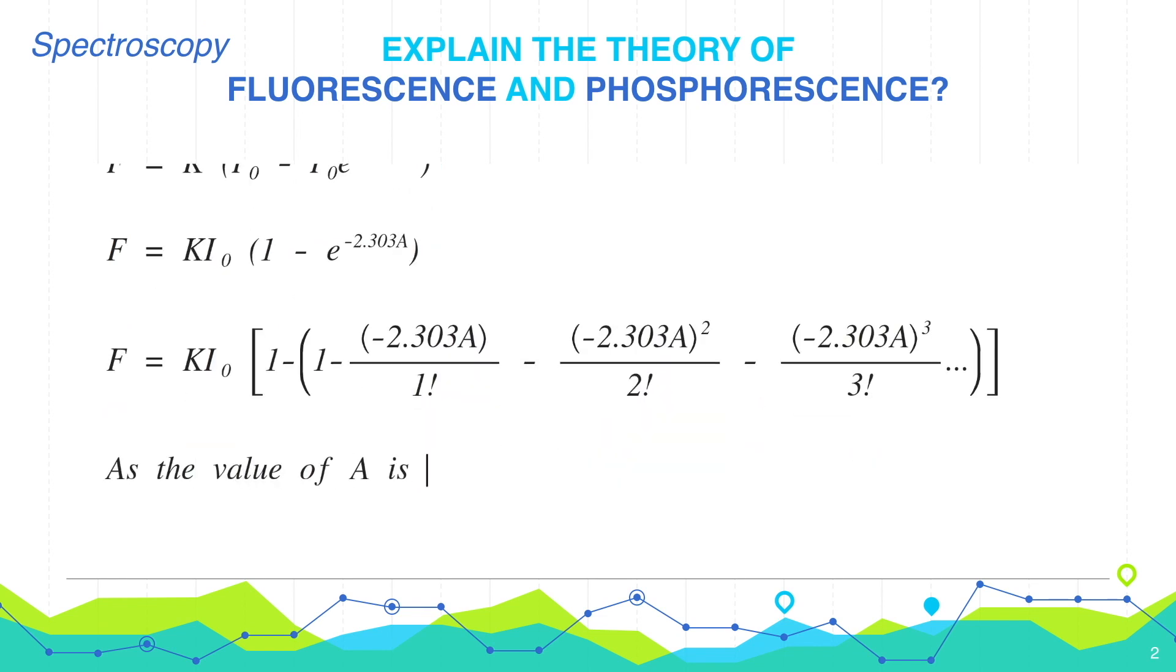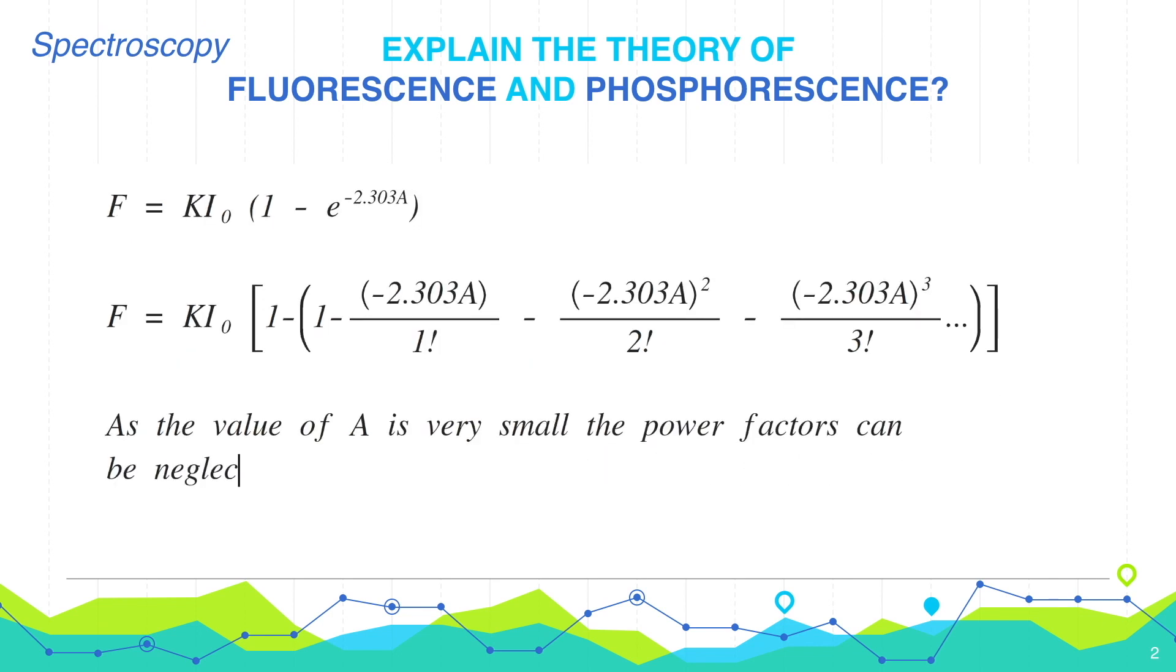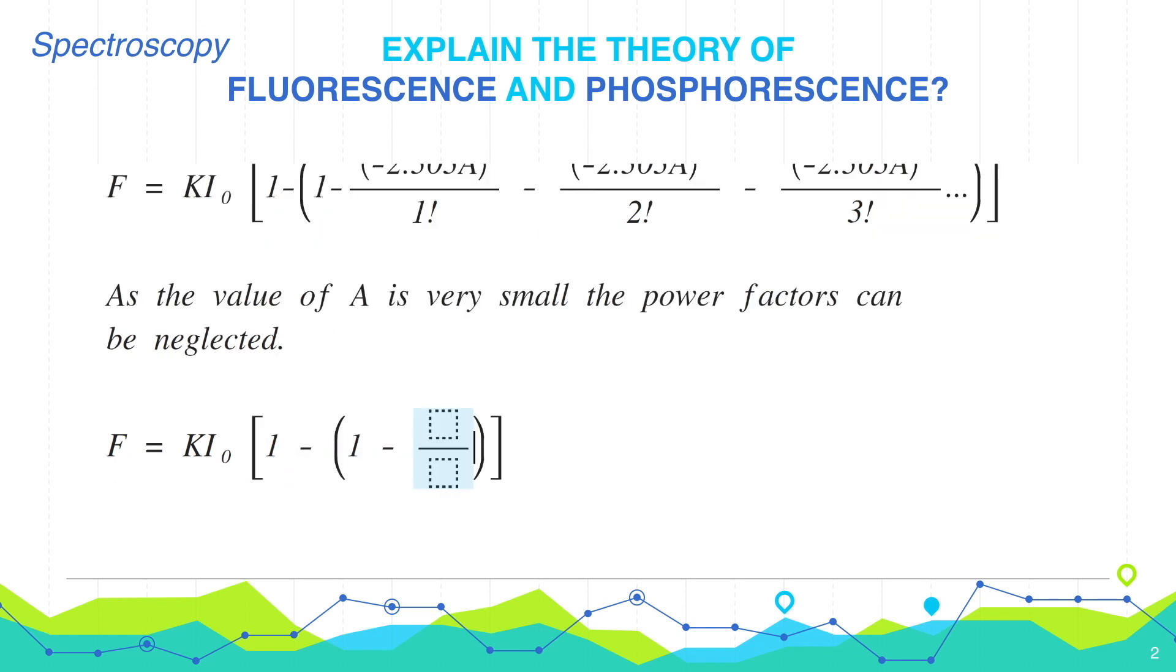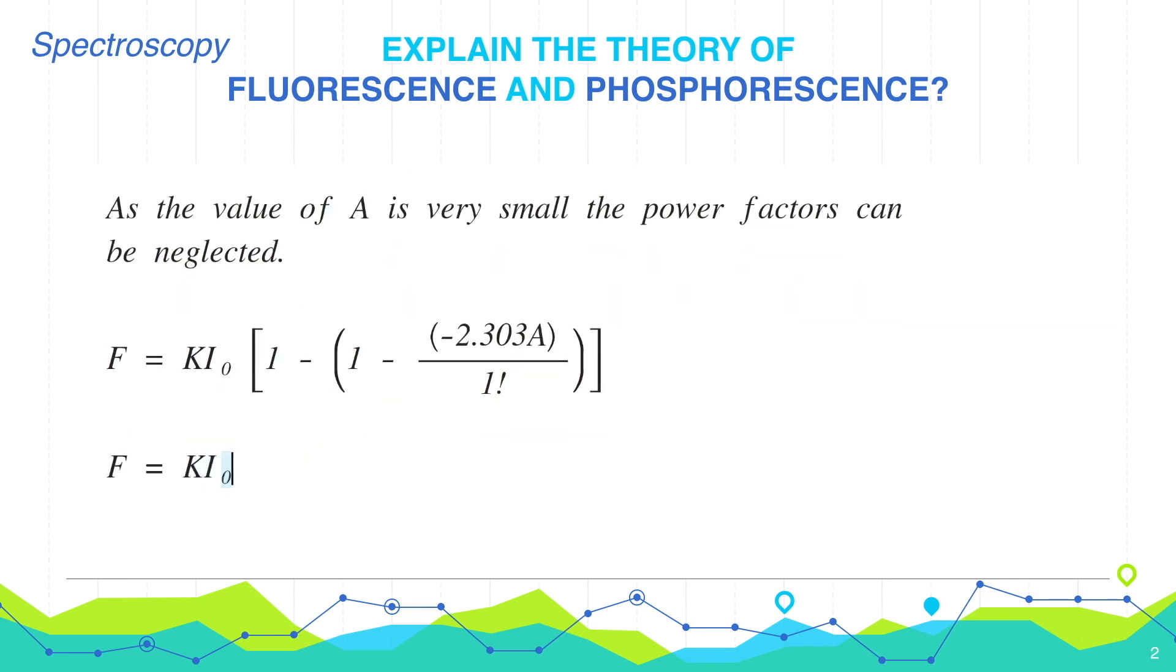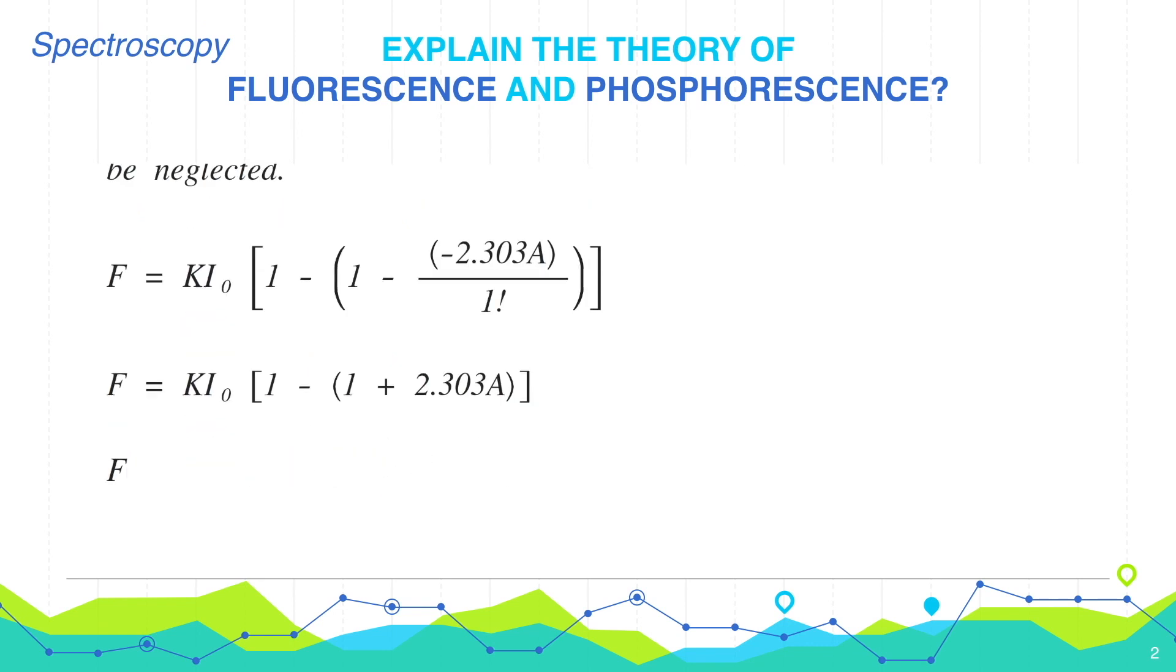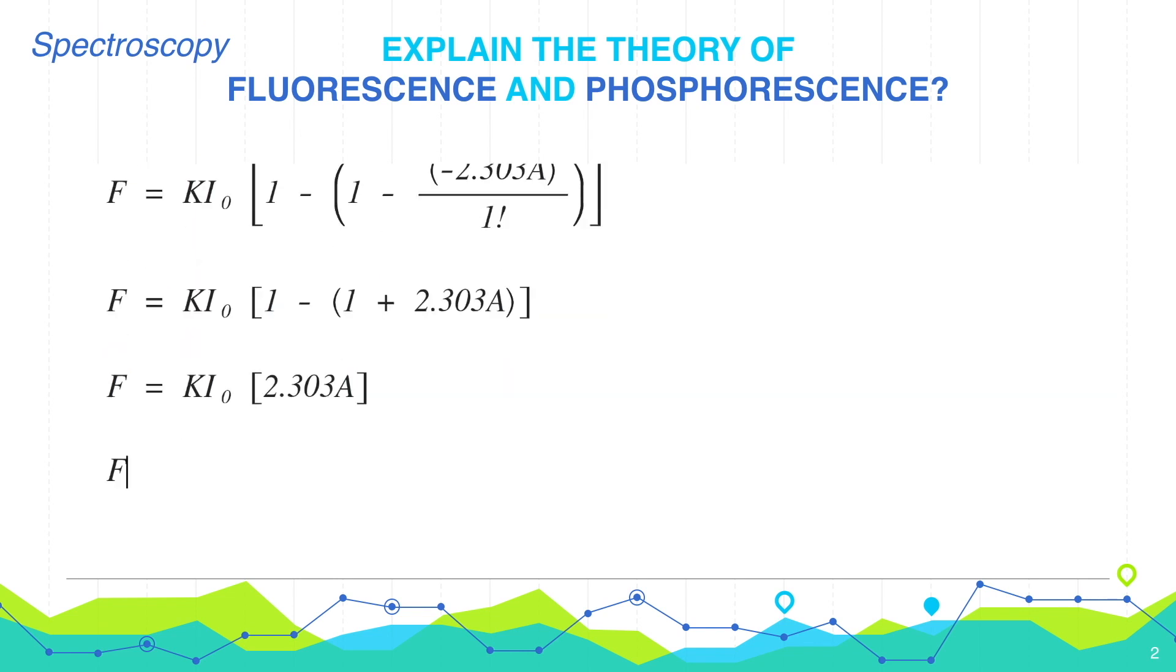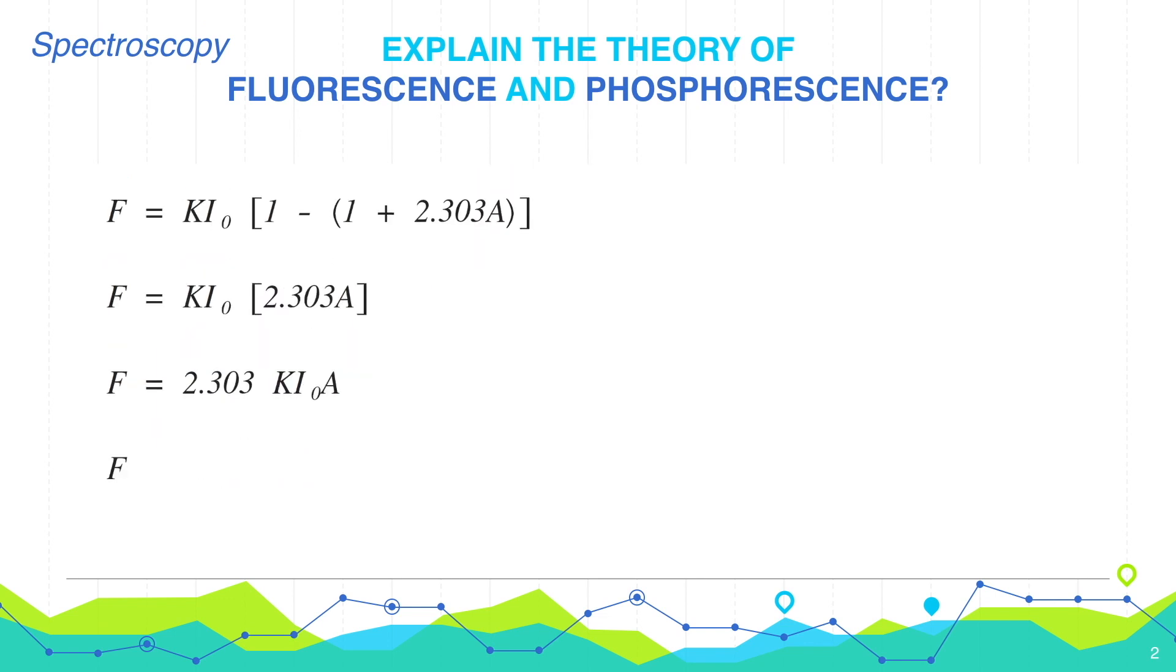As the value of A is very small, the power factors can be neglected. So the equation becomes F equals K I0 times 1 minus 1 plus 2.303A, which is K I0 times 2.303A. Therefore, F equals 2.303 K I0 A, or it can also be written as F equals 2.303 K I0 epsilon C L.